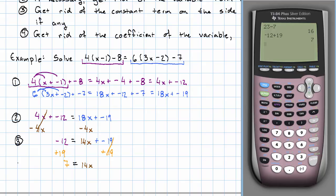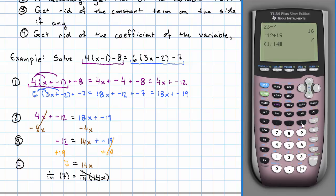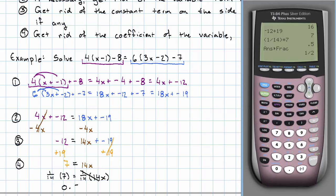And finally, step 4: to get rid of that coefficient, I want to multiply both sides by 1/14. The 14 and the 1/14 cancel out. One fourteenth times 7 is 0.5, or one half, whichever you prefer. So I get 0.5 equals x — though often we prefer to write our solution as x equals 0.5. That's our solution.